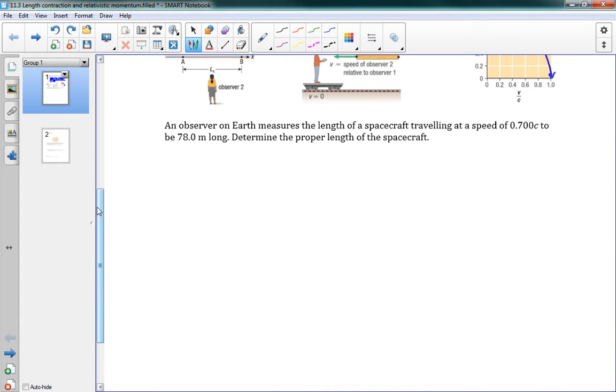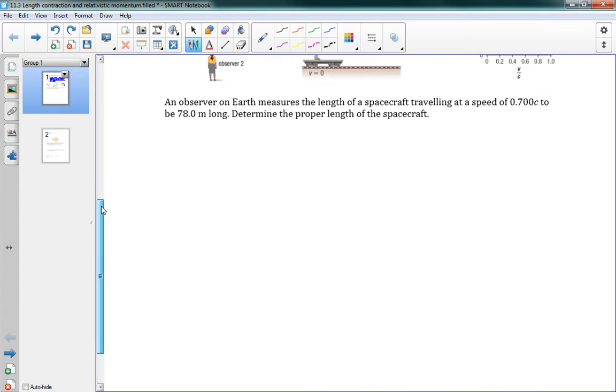So let's try a problem with this. It says an Observer on Earth measures the length of a spacecraft traveling at a speed of 0.7c to be 78.0 meters long. Determine the proper length of the spacecraft. We want the proper length because the Observer on Earth sees the spacecraft traveling. It looks like it's 78 meters long from that perspective. But the only person who can truly measure how long the spacecraft is is somebody on the spacecraft, somebody that's not moving relative to the spacecraft.